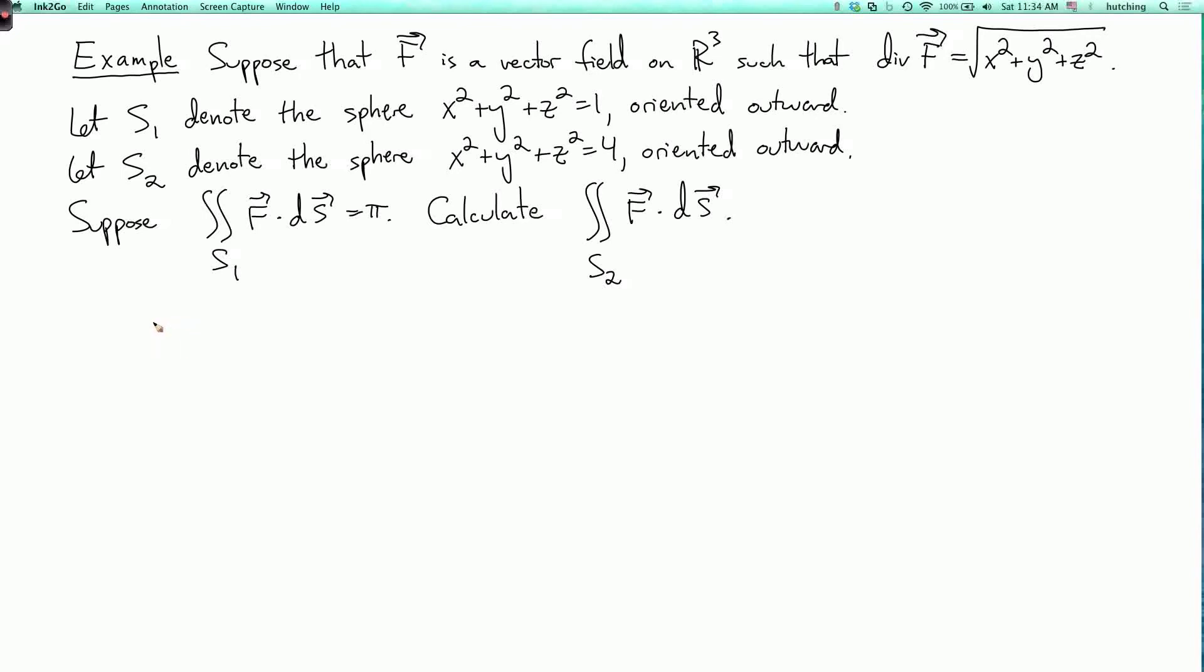Here's an example of a problem that can be solved using the divergence theorem. We're given that F is a vector field in three-dimensional space, and we don't actually know what the vector field is, but we're given that the divergence of the vector field is the square root of x squared plus y squared plus z squared.